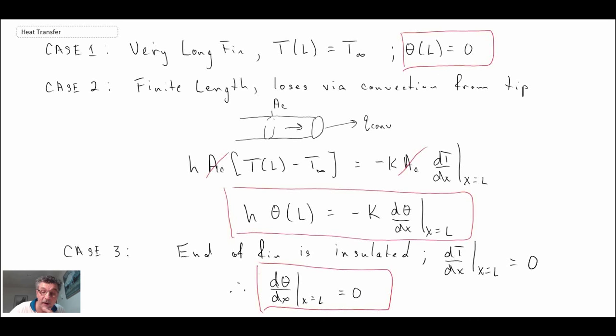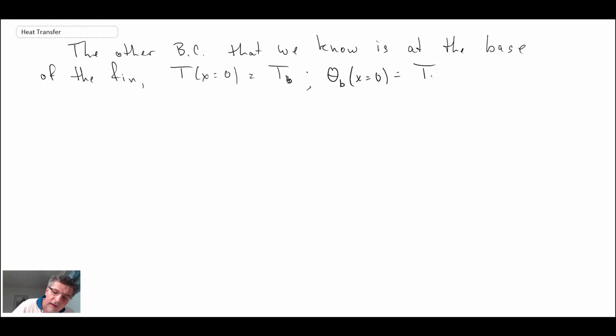There is one other boundary condition that I forgot to mention before we go to determining C1 and C2. The other boundary condition is what is happening at the base of the fin. If you recall from our schematic, we said that temperature at x equals 0 is equal to Tb for the base temperature. So we can write out theta base at x equals 0 is Tb minus T infinity, or the free stream fluid temperature.